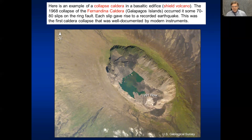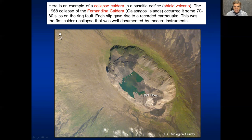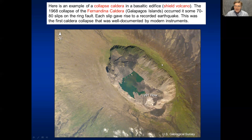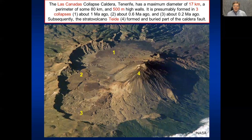One well-exposed and clear collapse caldera is the Fernandina caldera in the Galápagos, which collapsed in 1968. There were 70 to 80 slips on the ring fault, each giving rise to a recorded earthquake. This was the first well-monitored, well-documented caldera collapse through modern instruments. A very similar one occurred recently at Kilauea, where again the total slip formed in numerous smaller slips.